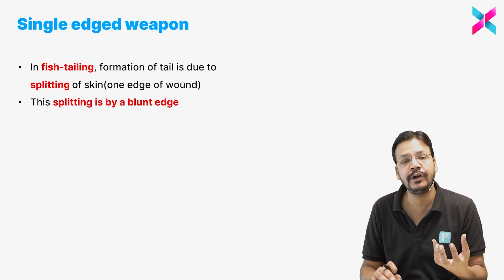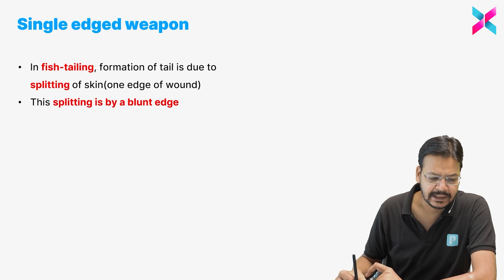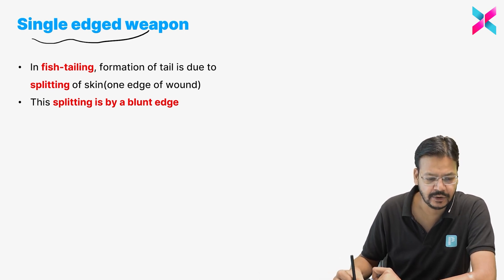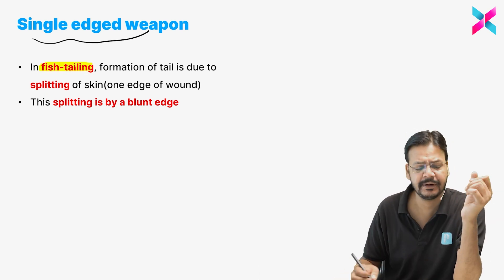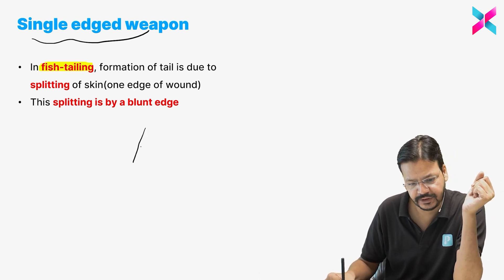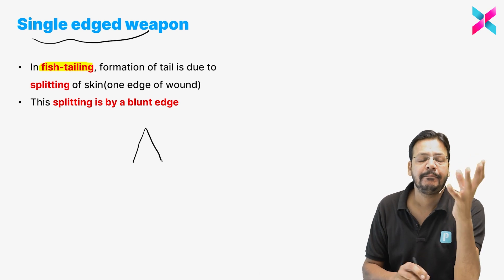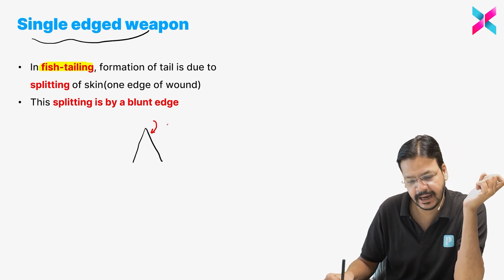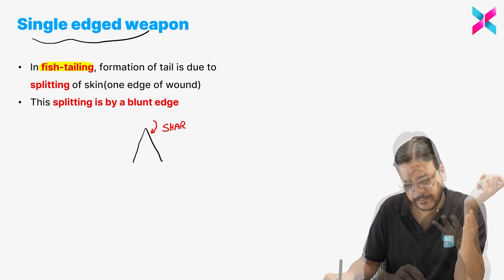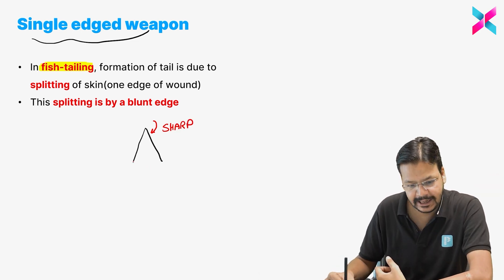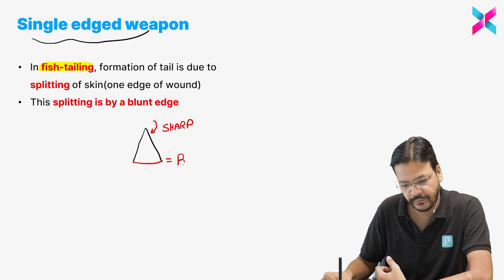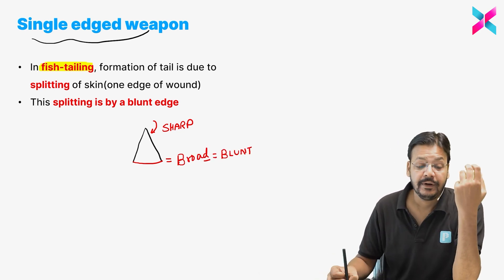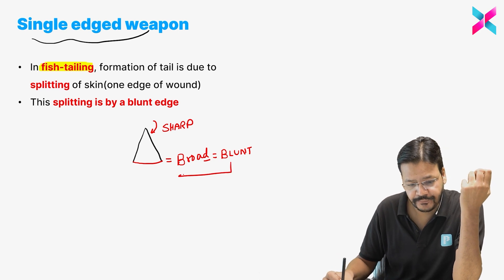In a single-edge weapon, there is a phenomenon known as fish-tailing. This is a very important phenomenon. Because it is a single-edge weapon, one angle will be acute due to the sharp margin, and the second angle will be broad due to blunt force.